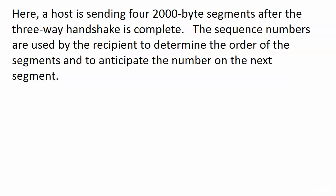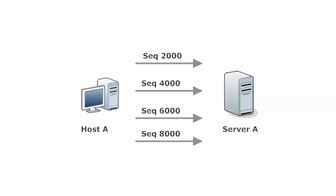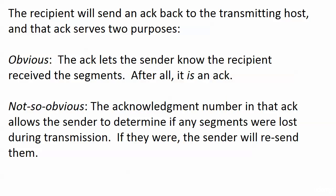A host sends four 2,000-byte segments after the three-way handshake, with sequence numbers 2,000, 4,000, 6,000, and 8,000. The sequence numbers are used by the recipient to determine the order of segments and to anticipate the next segment number. The recipient then sends an ACK back, which lets the sender know the segments were received and also allows the sender to determine if any segments were lost. If they were, the sender will resend them.